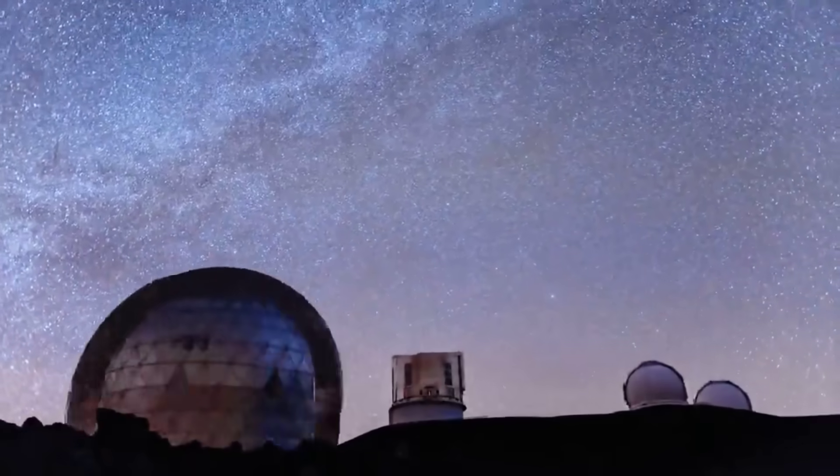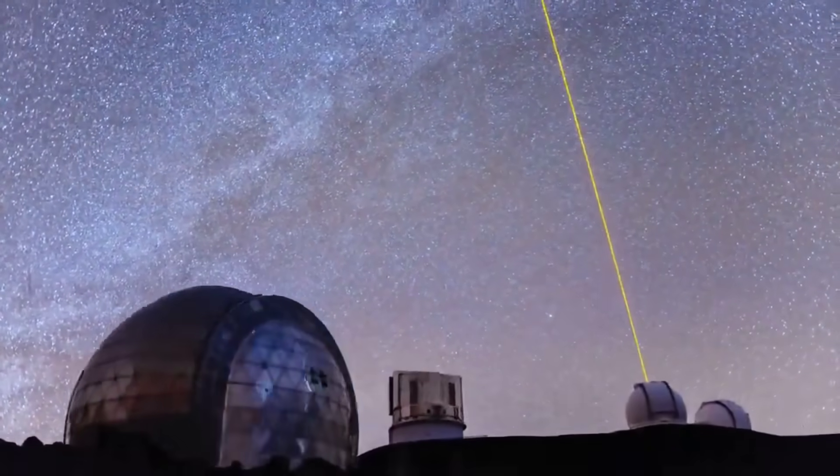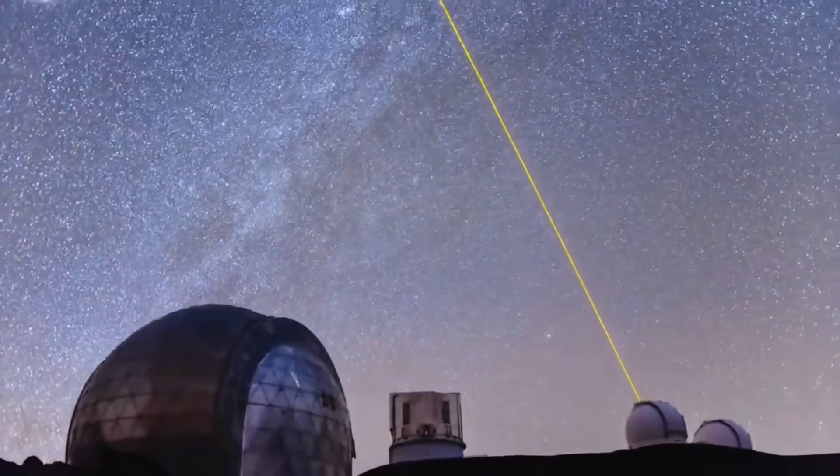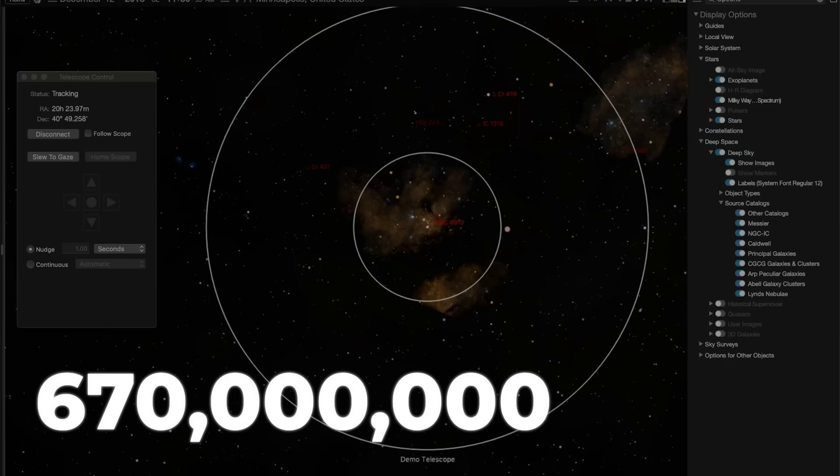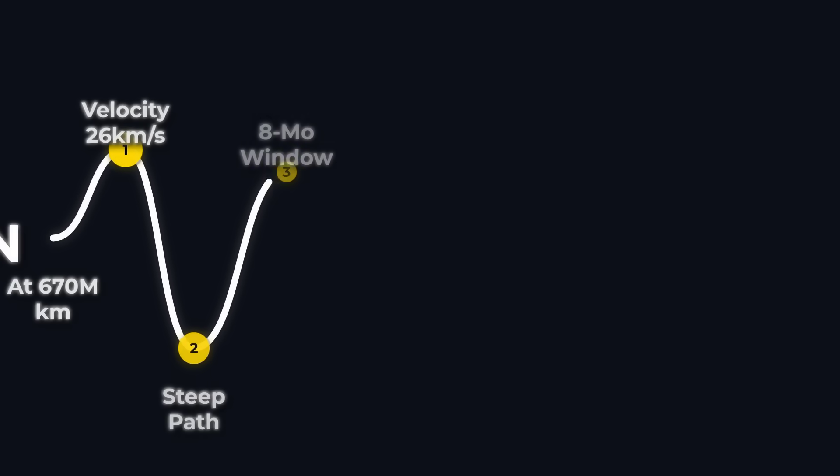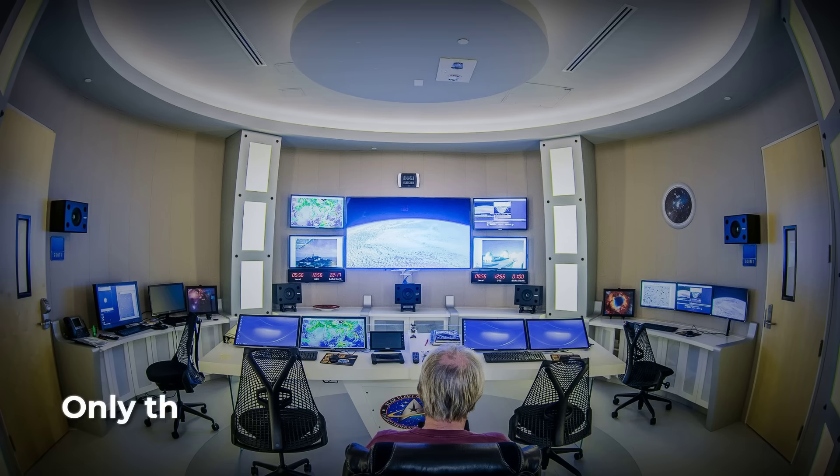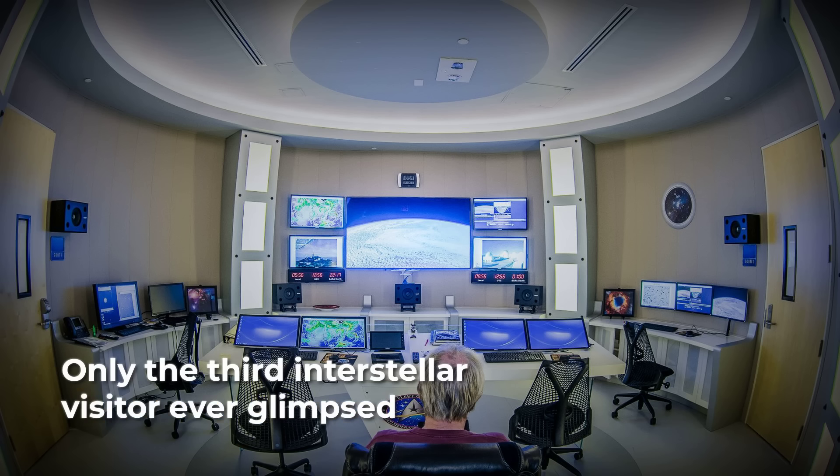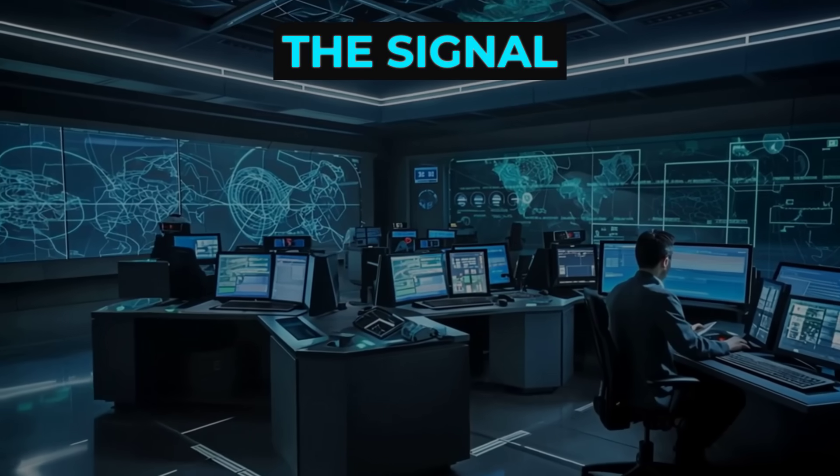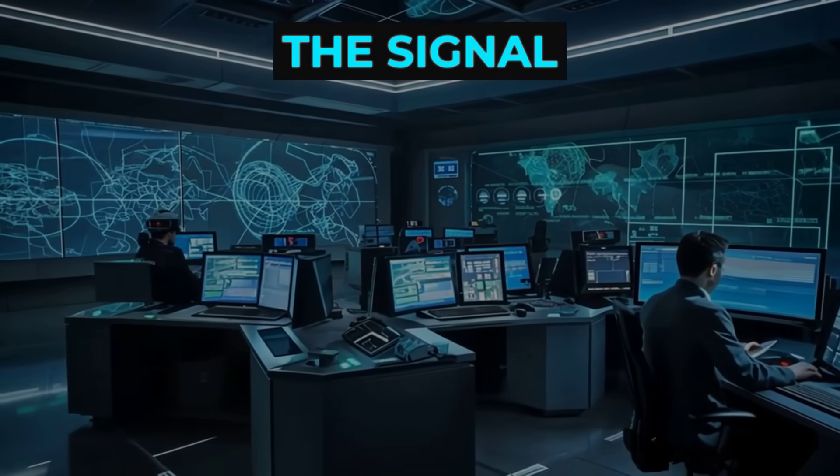July 1st, 2025. An ordinary scan of the night sky, until astronomers spot something no one expected—a faint traveler, 670 million kilometers from the Sun, hurtling through our solar system on a path no comet from here could trace. In that instant, 3I-ATLAS—only the third confirmed interstellar object ever seen—becomes the signal everyone is chasing.